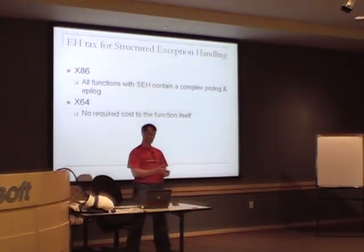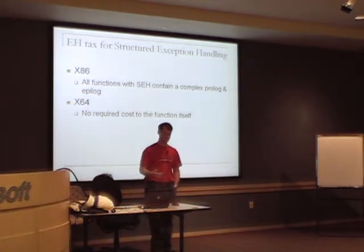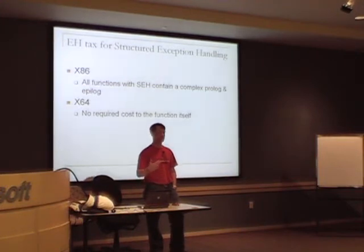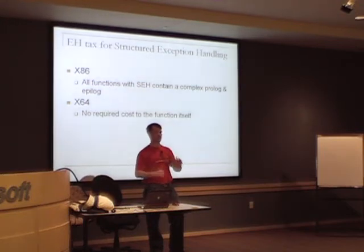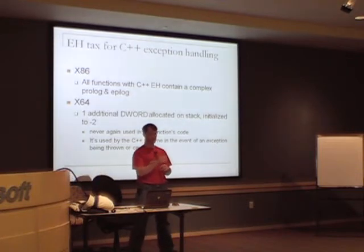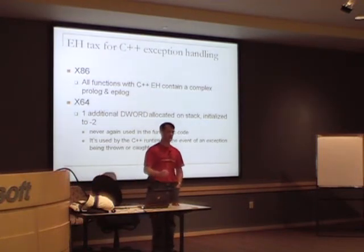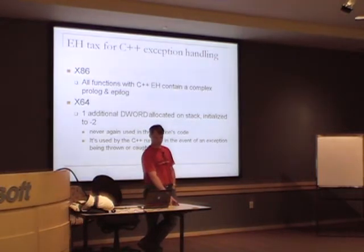On x86, all functions with structured exception handling contain a complex prologue and epilogue — a set of instructions that must run before your code executes. For x64, AMD64 and Intel EM64T, there's no cost to the function itself; stepping into the function takes no additional instructions just because you have an object or a try-catch. For C++, x86 is the same — complex prologue and epilogue. For x64, there is a single element on the stack allocated and initialized to negative two, resulting in a single instruction penalty and four bytes of stack usage.